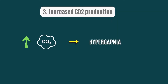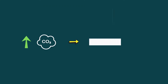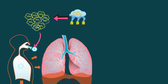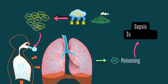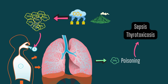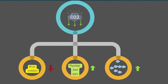The third cause of hypercapnia is anything that increases CO2 production. This group is more likely to contribute only partially to hypercapnia and is not usually the primary cause, but it can occur in conditions that increase metabolic rates. Environmental exposure to areas rich in carbon dioxide — such as volcanoes or geothermal activity — puts patients at risk for carbon dioxide poisoning. It can also lead to conditions such as sepsis, thyrotoxicosis, or fever.